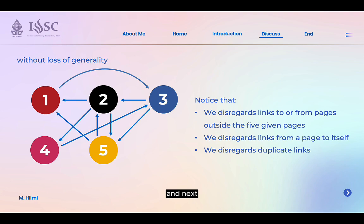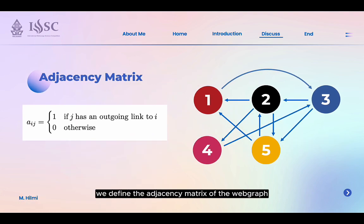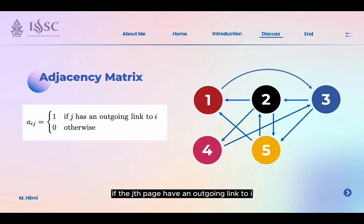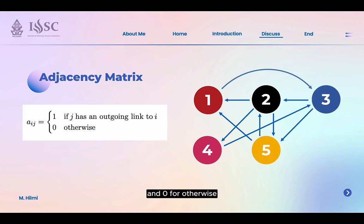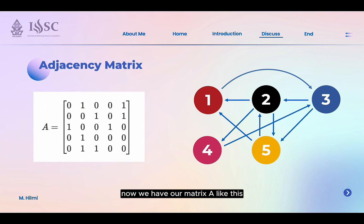Next, we define the adjacency matrix of the web graph. That's the matrix A where entry aᵢⱼ is 1 if page j has an outgoing link to page i, and 0 otherwise. From that definition, we now have our matrix A.